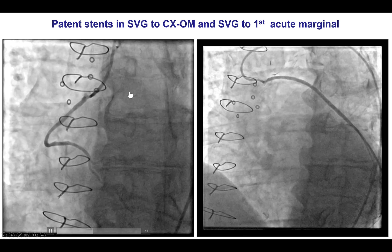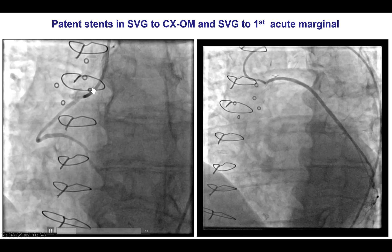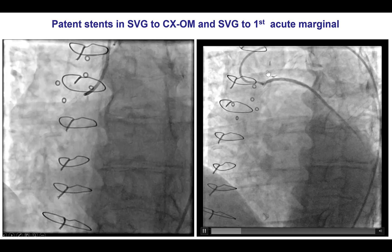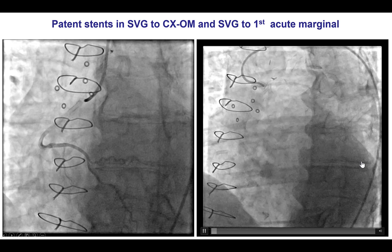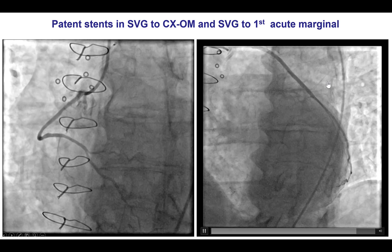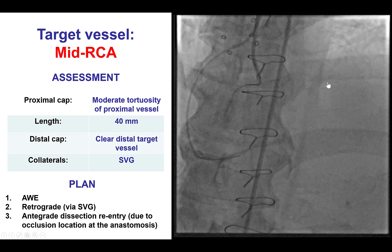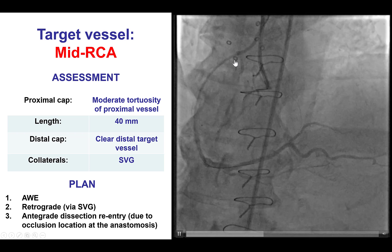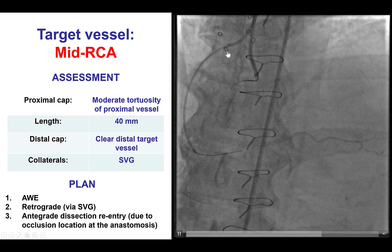He also had two other vein grafts. One was to an acute marginal branch that was patent, and the other was to the obtuse marginal branch that was also patent. Both of those grafts had been stented in the past. Therefore, the culprit was the proximal SVG to right coronary artery lesion.